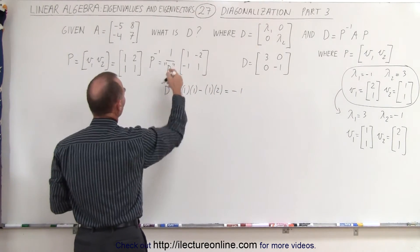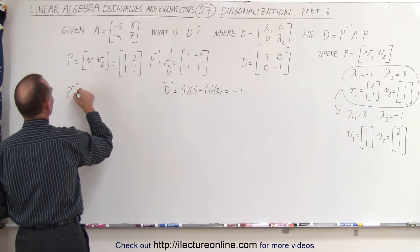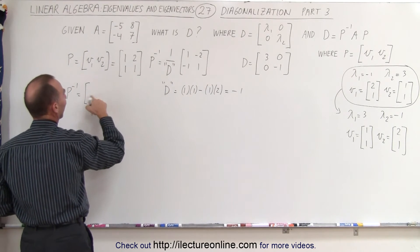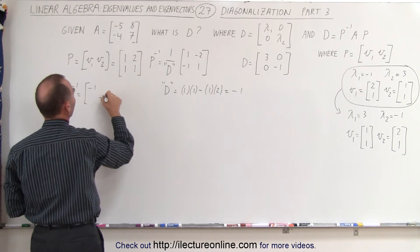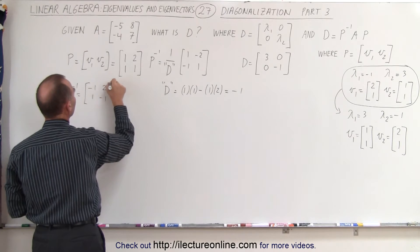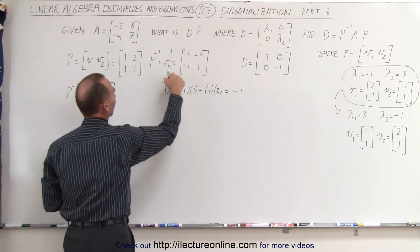Okay, to compensate for that, we can then say that P inverse is equal to minus 1 times this, and I'm just simply going to change all the signs: minus 1, minus 1, 2, and 1. That compensates for the 1 over negative 1 there.